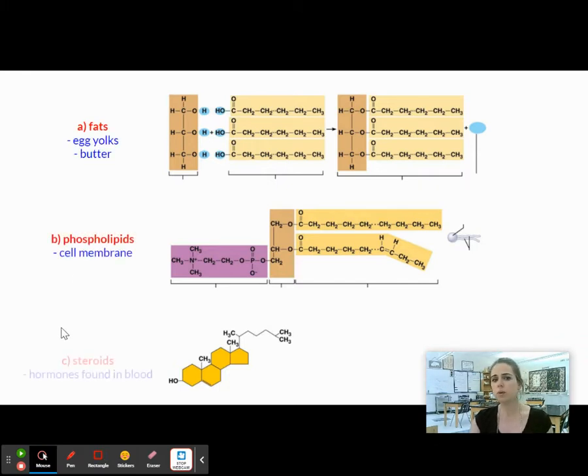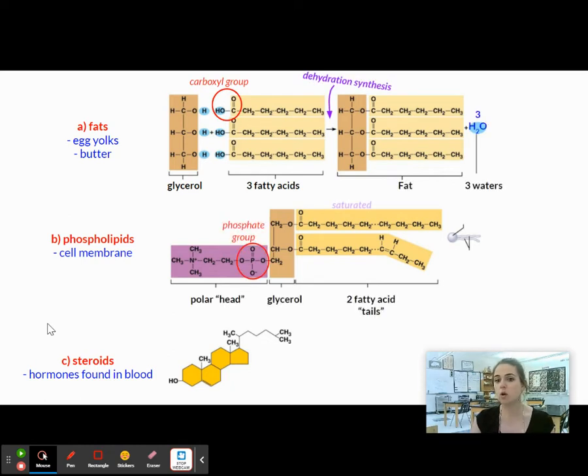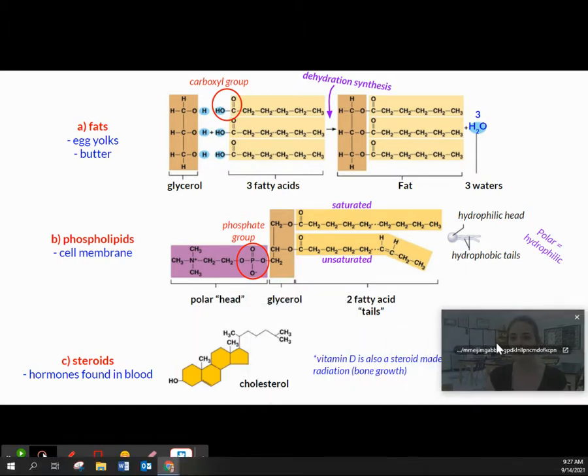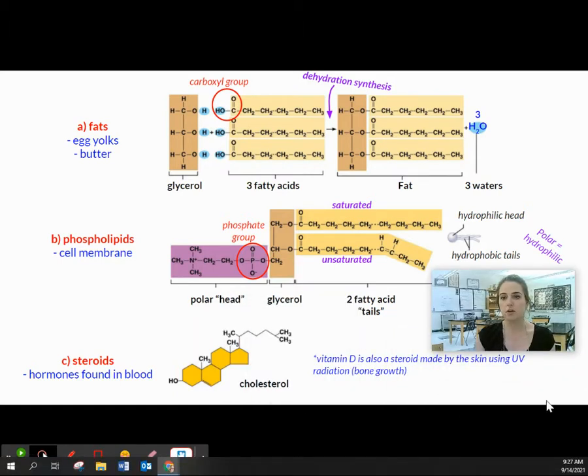This slide we did cover, but it was super fast in class last week. And so I wanted to give you all the opportunity to get this all written down again. So what we're looking at here are the lipids and there's three main groups of lipids: fats, phospholipids, and steroids. And we introduced those already.